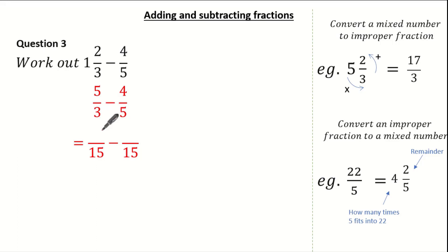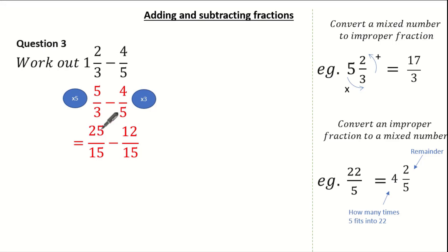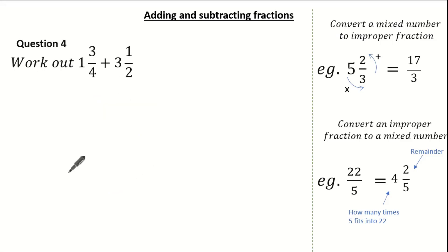What do we times 3 by to give 15? It's 5. What do we times 5 by to give 15? It's 3. Then we simply multiply: 5 times 5 is 25, 3 times 5 is 15, 4 times 3 is 12, and 5 times 3 is 15. Now it's super easy because we have the denominators the same. So 25 fifteenths take away 12 fifteenths gives me a final answer of 13 over 15.